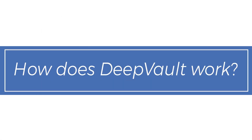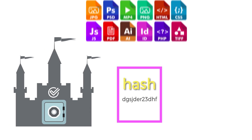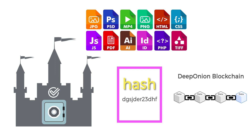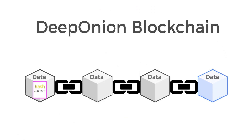How does DeepVault work? DeepVault stores a credential, also called a hash, of any type of document or file into the DeepOnion blockchain. Since the blockchain is immutable, when you register something on it, you can be sure that it will never change.